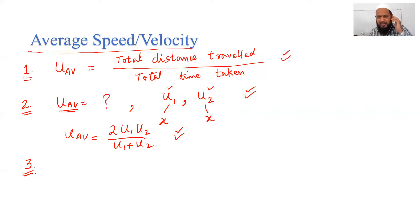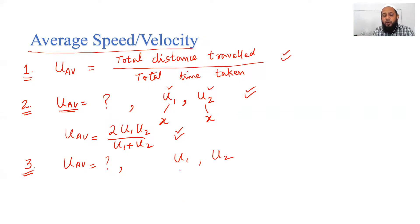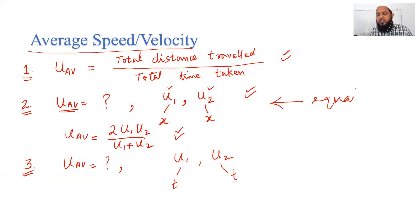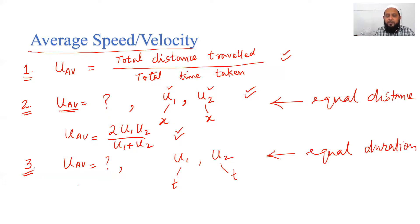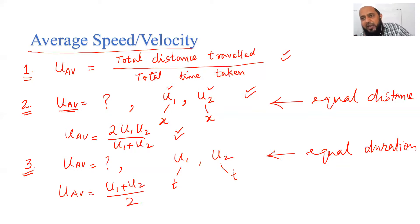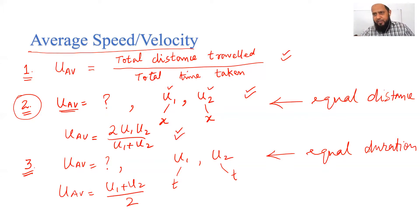The second type of problem: two different speeds u1 and u2 are given, each for equal time duration (equal duration problem). In this case, you directly calculate u_average = (u1 + u2) / 2. For this case, there should be constant acceleration. That's all I'll mention here; I'll explain more on the graph.